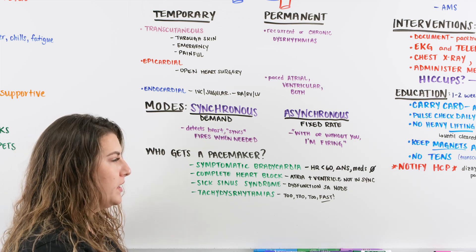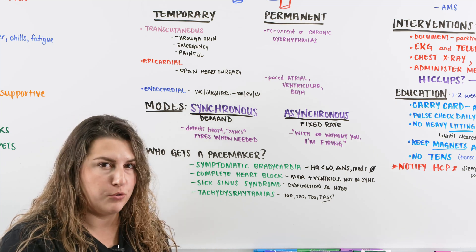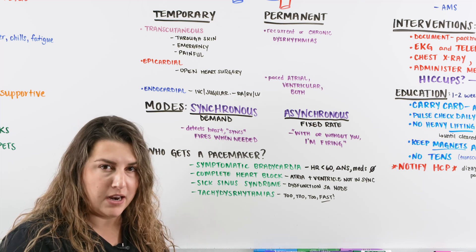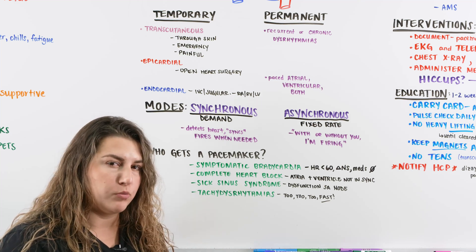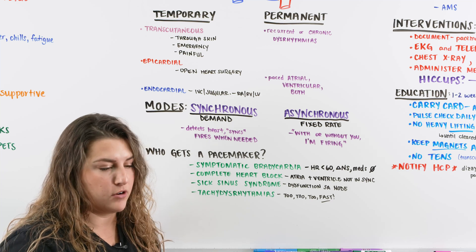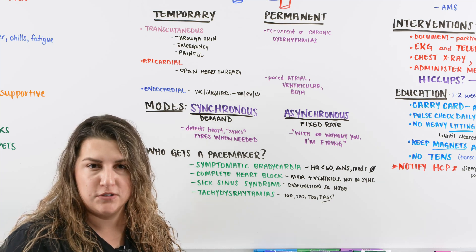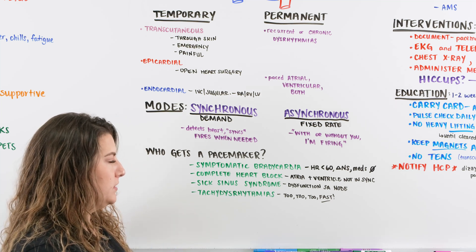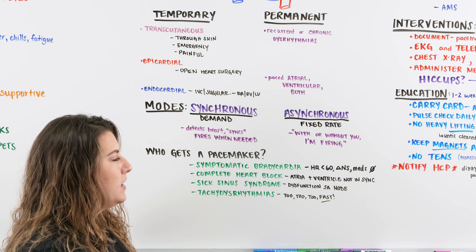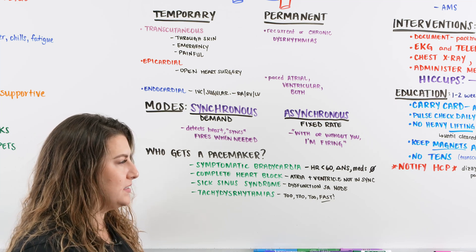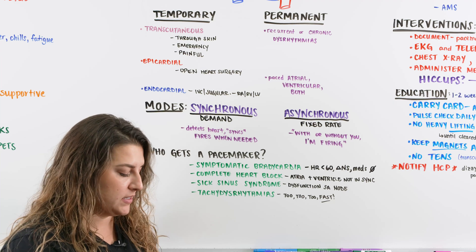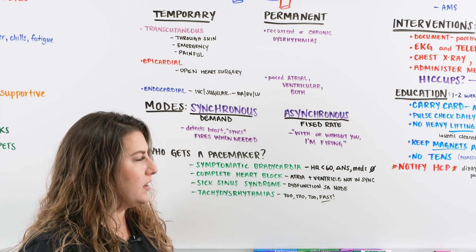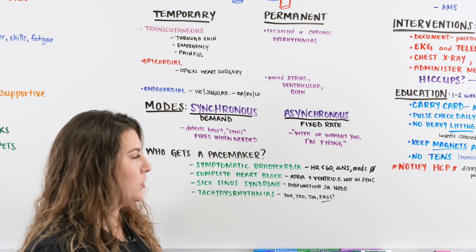We have symptomatic bradycardia, meaning we have a patient who keeps bradying down. They keep going into the 50s, the 40s, and they are symptomatic with it and not being controlled with medications. If it's not severe enough where they maybe want to try some medications first, then those don't work, we're going to be looking at a patient that possibly is going to need a pacemaker. Symptomatic bradycardia is when we have that heart rate lower than 60, we have a change in neuro status. Someone who's getting dizzy, someone who's getting disoriented, someone who's having syncopal episodes, and they're not getting response from medications helping.